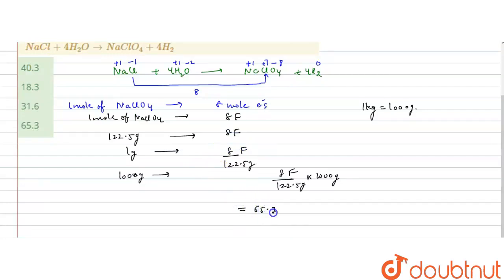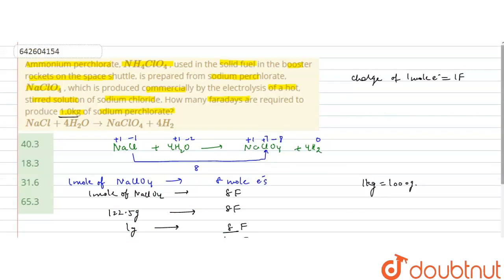65.3 Faradays. So 65.3 Faradays are required to produce thousand grams, or one kilogram, of NaClO4. So the correct answer to this question is option D, 65.3. I hope you understood the solution. Thank you.